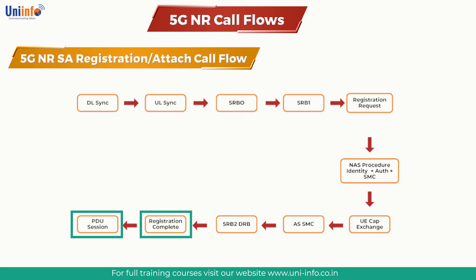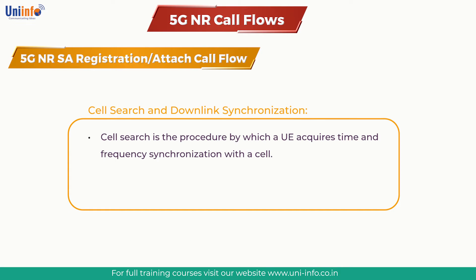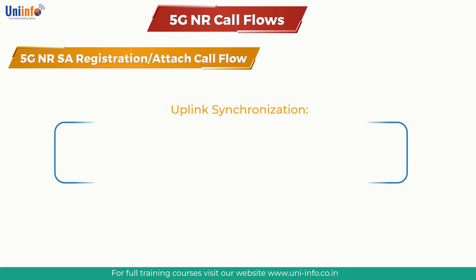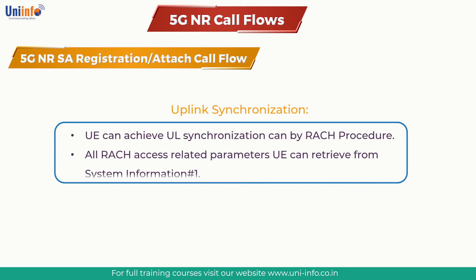Cell Search and Downlink Synchronization: Cell Search is a procedure by which a UE acquires time and frequency synchronization with a cell, decodes the cell ID and PBCH MIB information. Next comes Uplink Synchronization. The UE can achieve uplink synchronization via the RACH procedure.